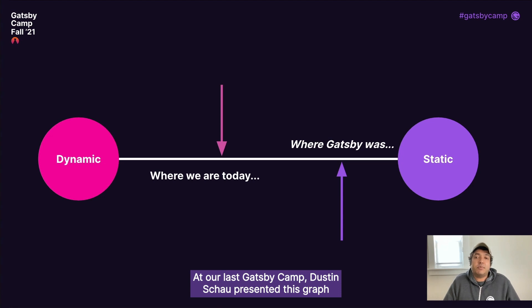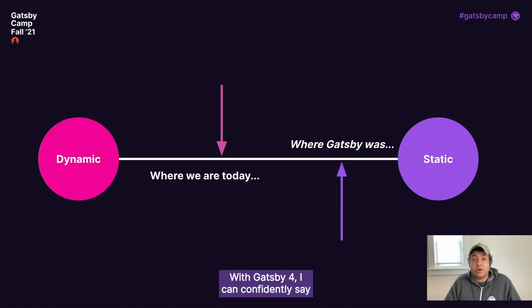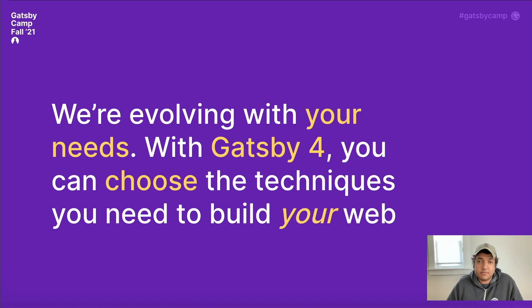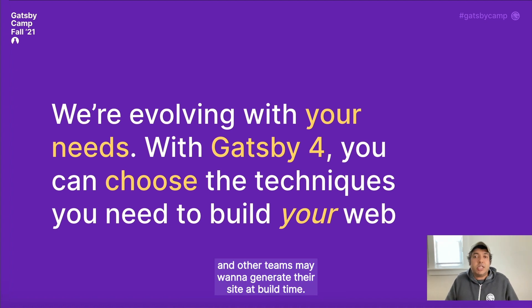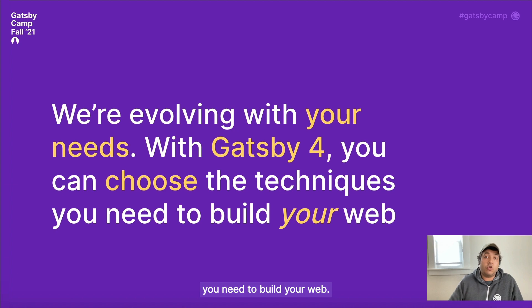At our last Gatsby camp, Dustin Shao presented a graph on how Gatsby is shifting left from the purely static world to somewhere in between. With Gatsby 4, I can confidently say we are shifting further left. We're evolving with the needs of the teams building Gatsby sites. Some teams may need to tap into the purely dynamic with SSR, and other teams may want to generate their site at build time. We're solving the problems on both fronts with Gatsby 4.